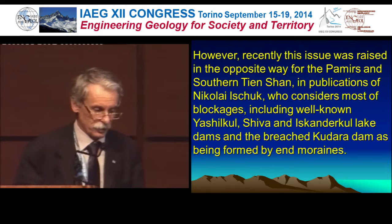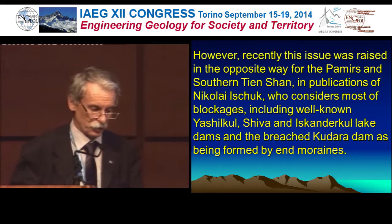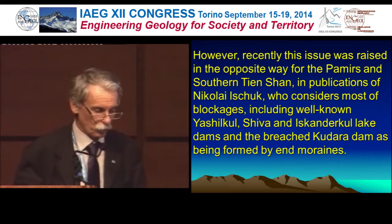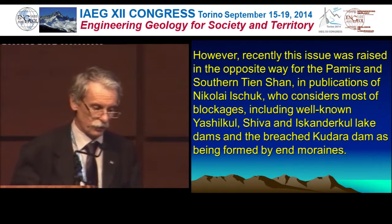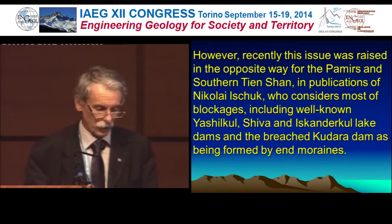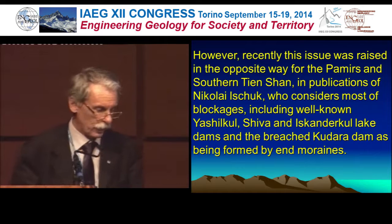However, recently this issue was raised in the opposite way for the Pamirs and southern Tianshan in a publication by Nikolai Ishuk from Tajikistan, who considers most of the blockages — including the well-known Yashilkul, Shiva, and Iskandarkul lake dams, and the breached Kudarade dam — as being formed by end moraines.